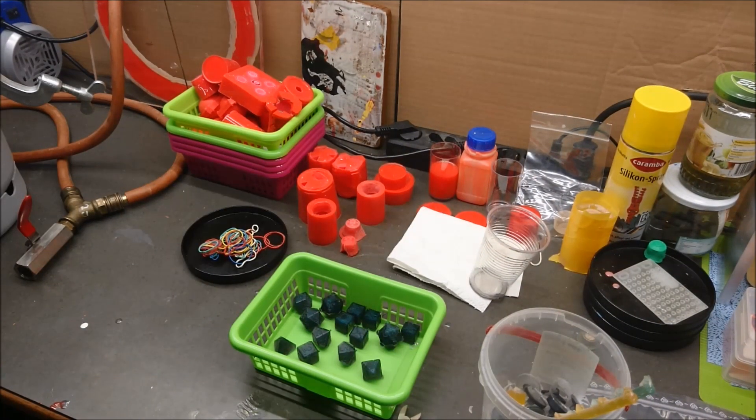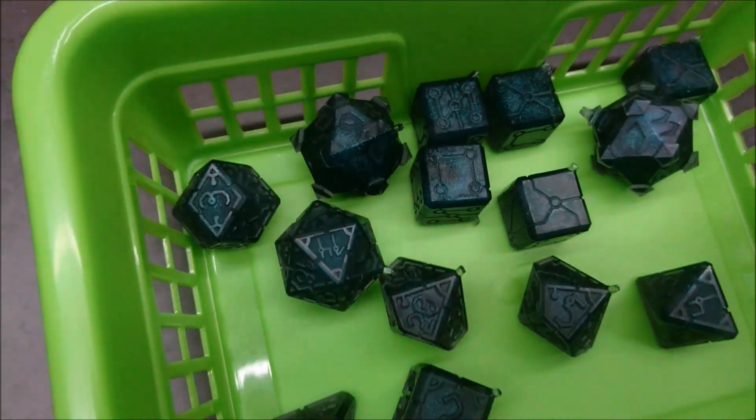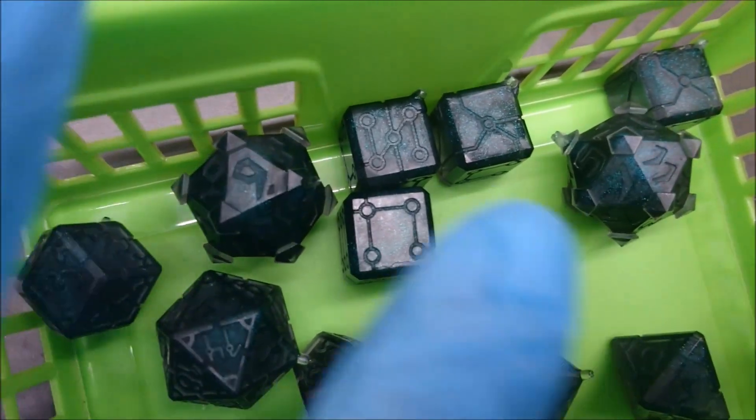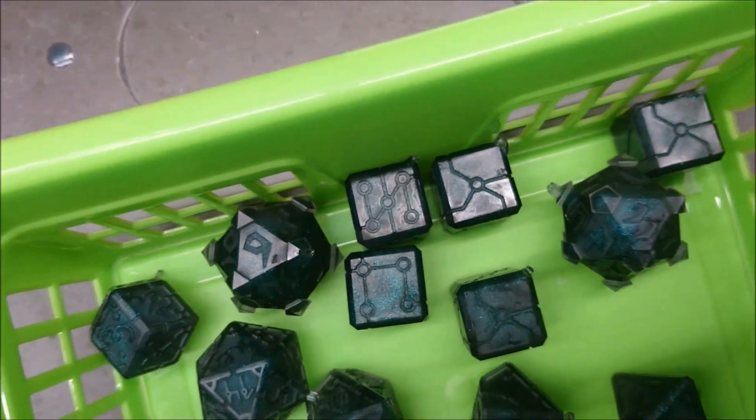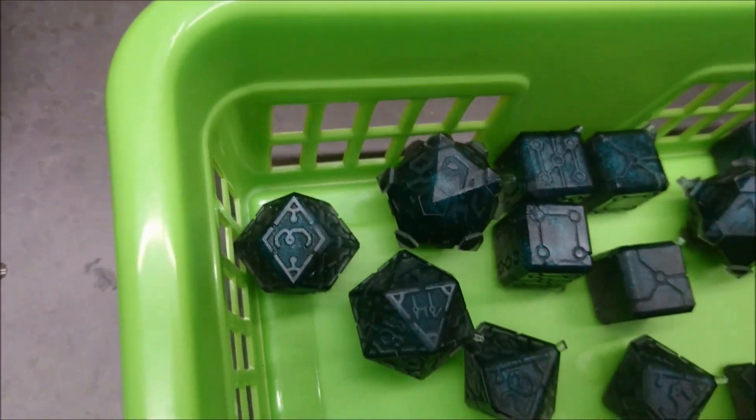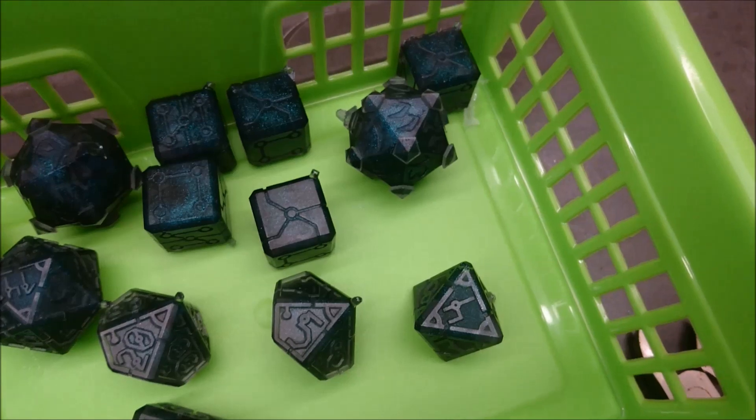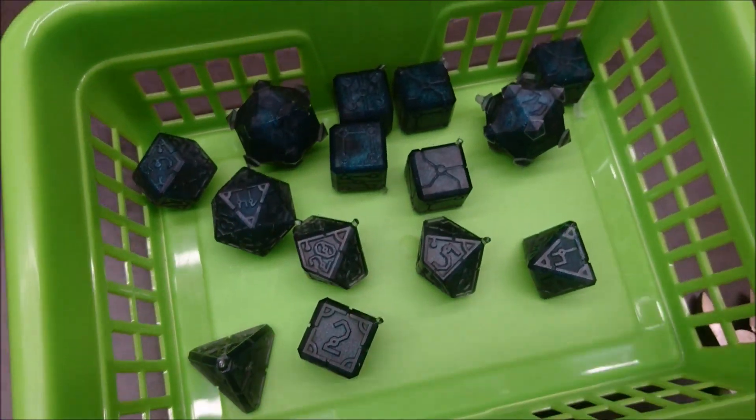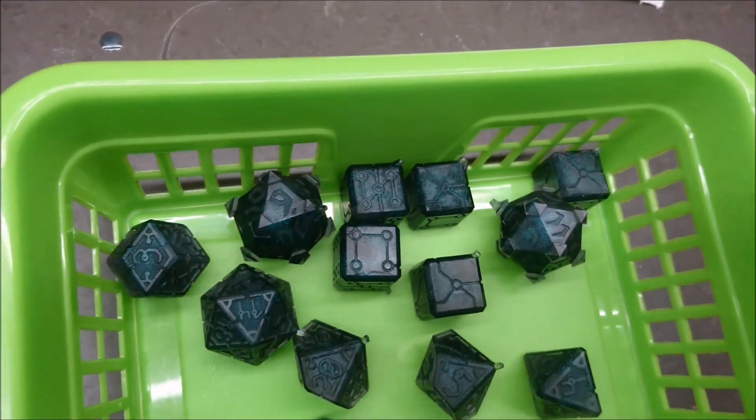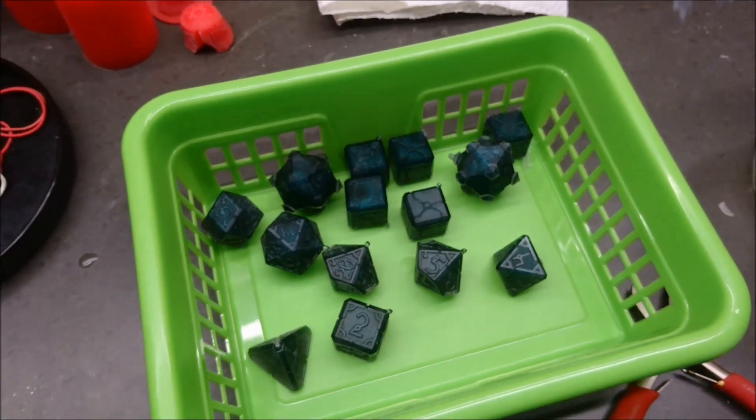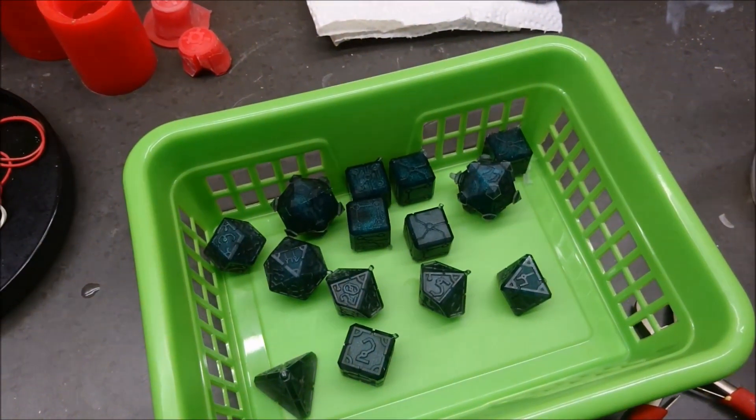And here we are. All the dice cut free. Let's see if I can get you a better idea. You see here on this guy the nice greenish glitter. Very happy with the result. That's pretty nice. Yeah, so next step is removing all the leftover sprue, cleanup and some paints.